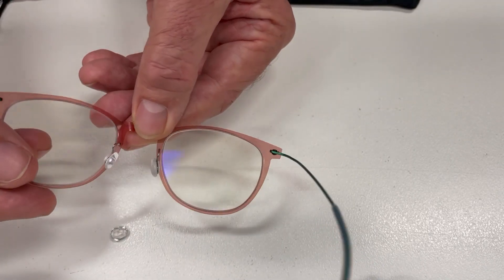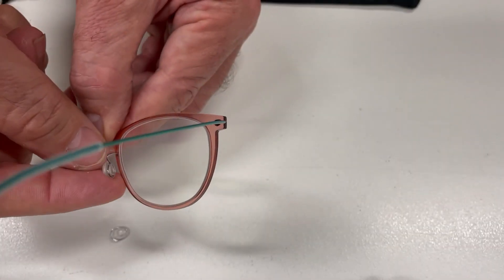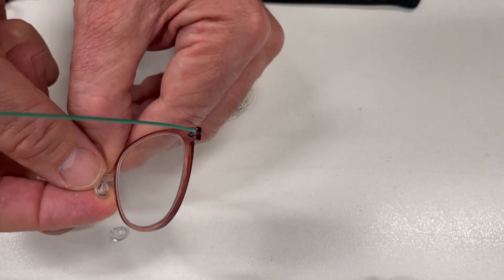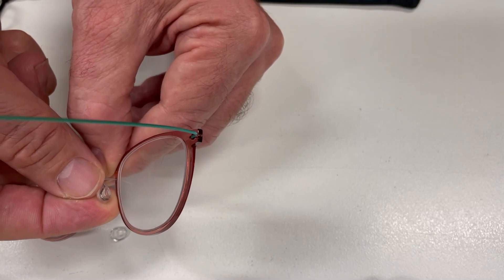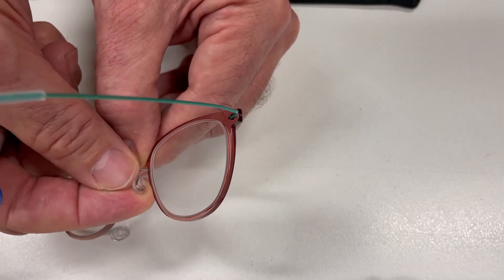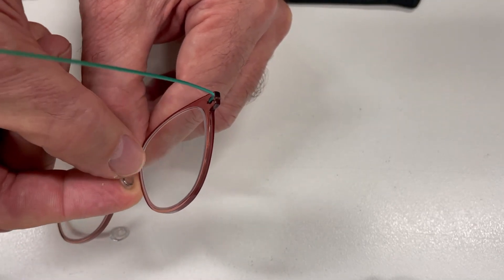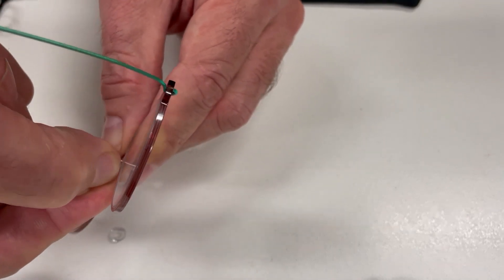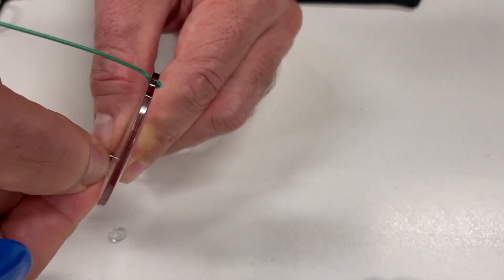To remove the old pad, we need to use a fair bit of force and push the thinnest part of the pad, which is actually the top, up through the wire. It'll stretch the wire a little bit. That's okay at this stage.